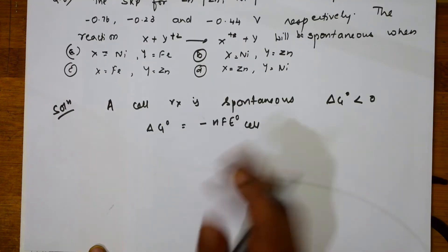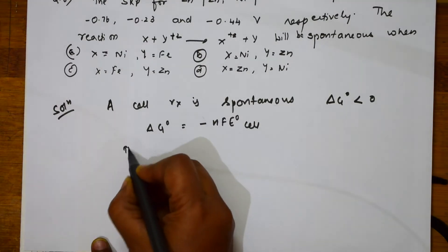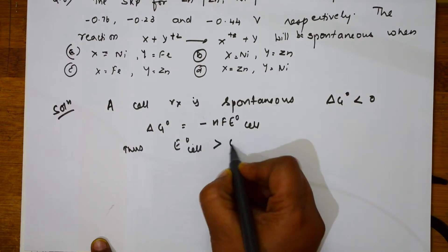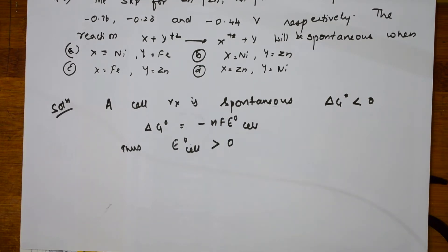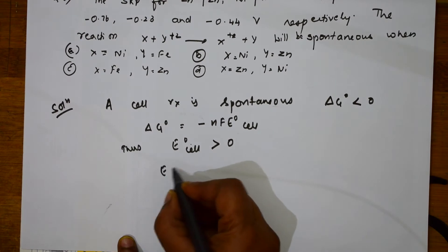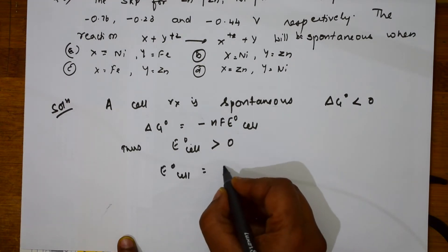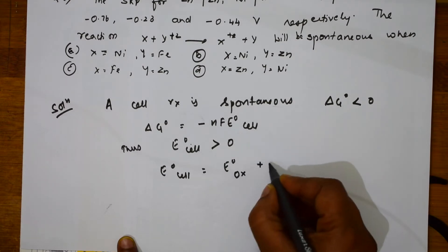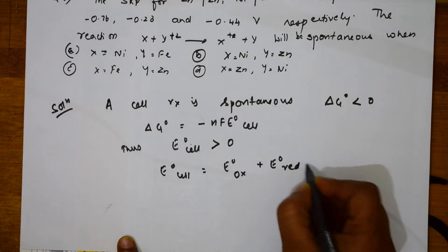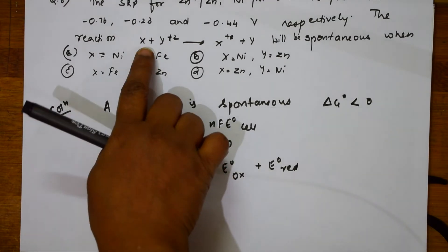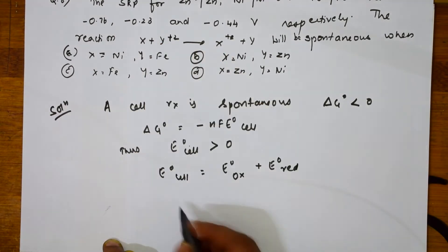Delta G naught is equal to minus NF E naught cell. This is what we have learned. Thus what can I write? E naught cell greater than 0. One more formula which we have learned: E naught cell is equal to E oxidation, I am clubbing all the formulas which we have learned, E reduction.